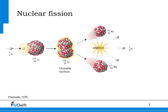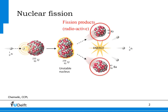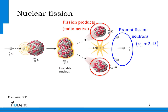When a uranium-235 nucleus absorbs a neutron, in 9 out of 10 cases it will fission into two fragments, called the fission products. Because heavy elements like uranium contain, relatively to the number of protons in the nucleus, a larger number of neutrons than lighter elements, there is a surplus of neutrons after the fission event. That's why on average about 2.45 neutrons are released after fissioning of uranium-235. The neutrons are released promptly, and are therefore called the prompt fission neutrons.